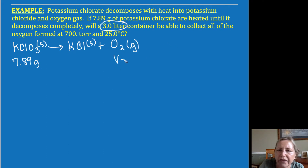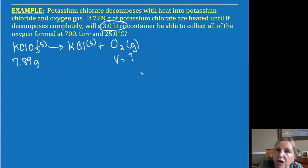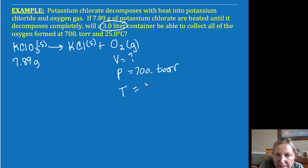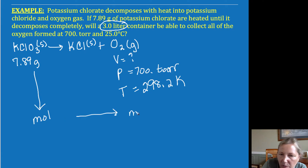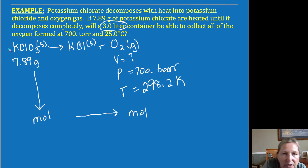Another way of saying that — what is my volume? If my volume is less than three liters, the answer is yes; if the volume would be greater than three liters, then no — not if I want to hold the pressure at 700 Torr and my temperature at 298.2 Kelvin. This is the same process: first get to the mole road, then go moles to moles. In order to go moles to moles, you need a balanced equation — so I need a 2, a 2, and a 3.